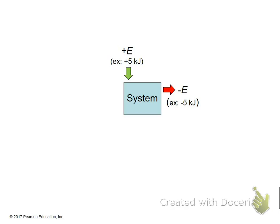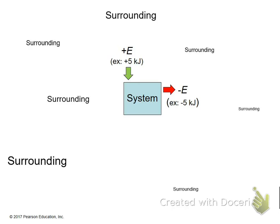Any energy that comes into the system is considered an endothermic process, so you give it a positive sign. Anything that comes out of the system is considered an exothermic process, so it receives a negative sign. In the neutralization reaction example, water is a surrounding, as is the reaction flask itself, the bench, and the air surrounding the reaction — those are all examples of surroundings.